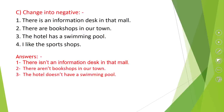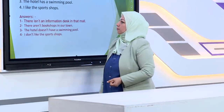Pay attention: when 'has' is a main verb, the negative form will be 'doesn't have.' In number four: I like the sports shop. Note that 'like' is a bare verb with no auxiliaries, so we use the auxiliary 'do,' and the negative form is 'don't.' So: I don't like the sports shop.